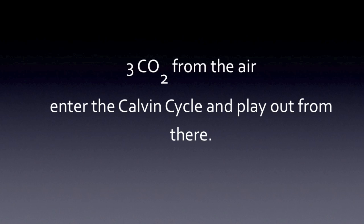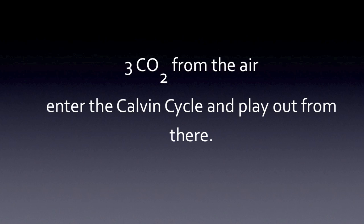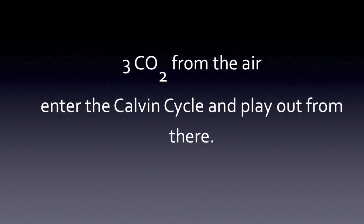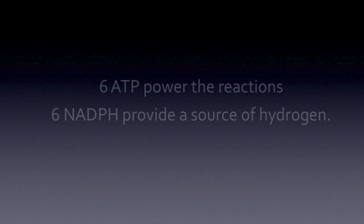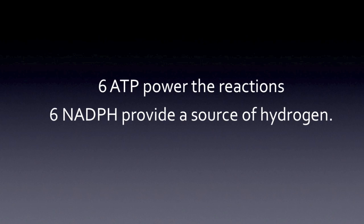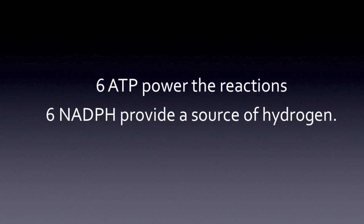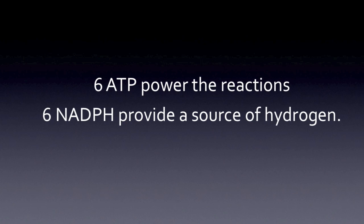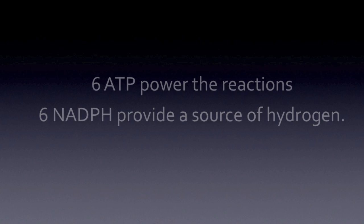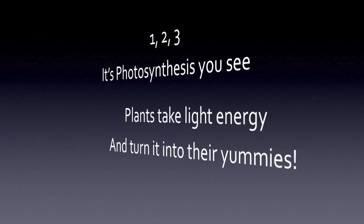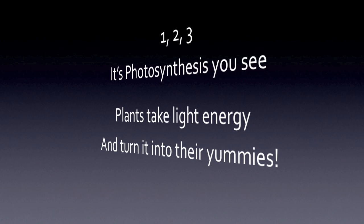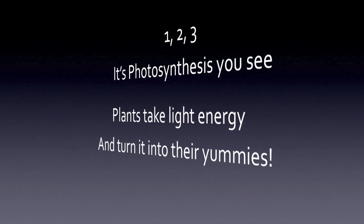3 CO2 from the air enter the Calvin cycle and play out from there. 6 ATP power the reaction, 6 NADPH provide a source of hydrogen. One, two, three, it's photosynthesis, you see — plants take light energy and turn it into their yummies.